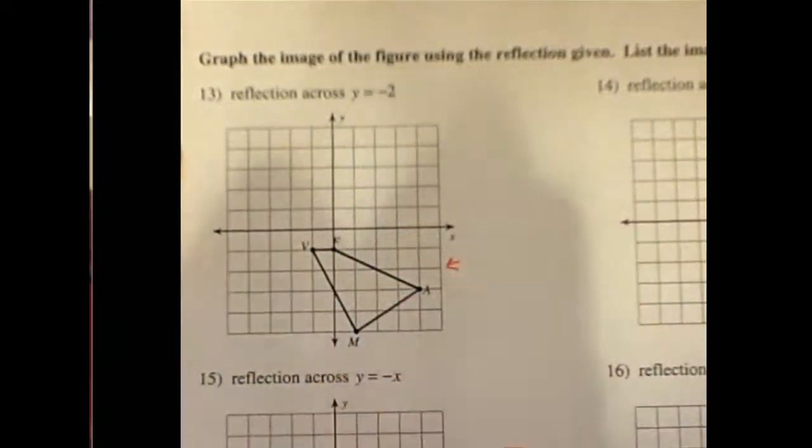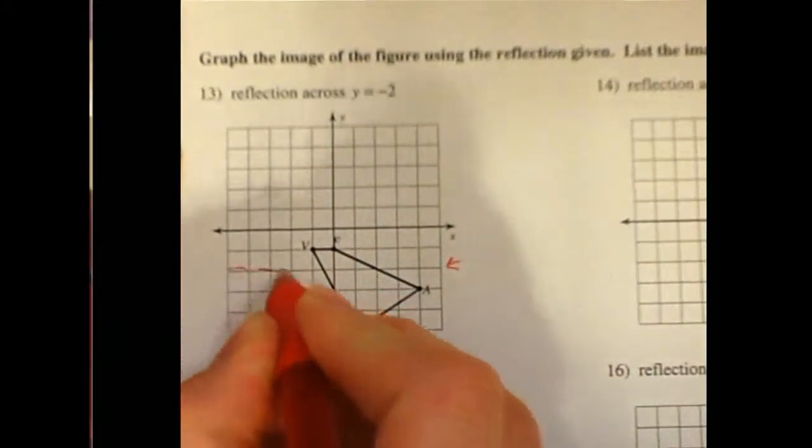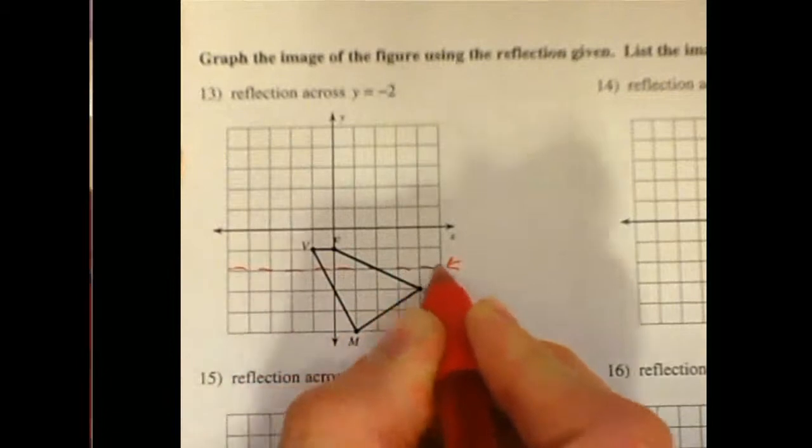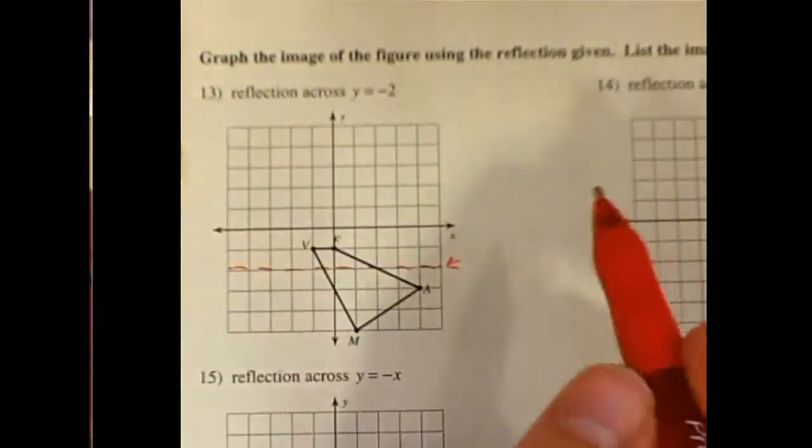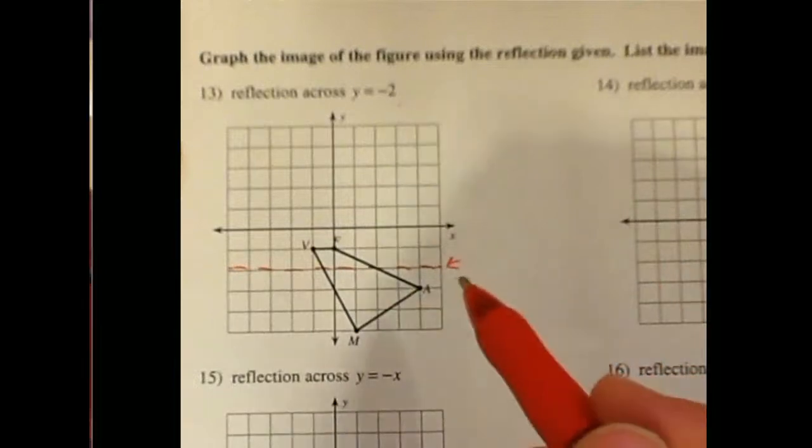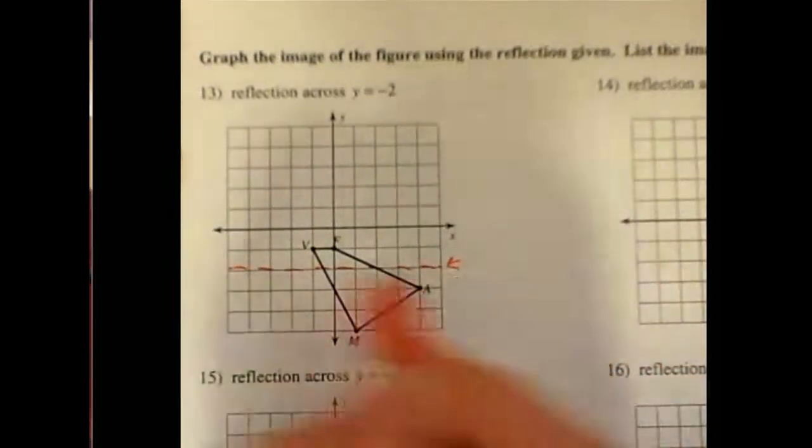We know that y is always going to be negative 2, so it is a horizontal line. It is not going to be a slanted line with a slope of 2. Don't get it confused with y equals negative 2x. y equals negative 2 is a line going straight across.